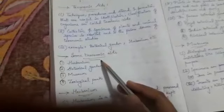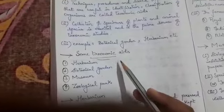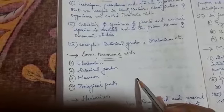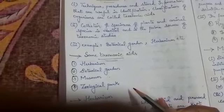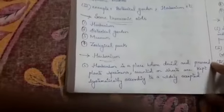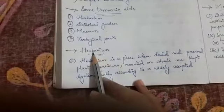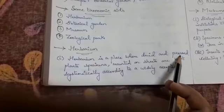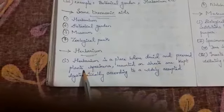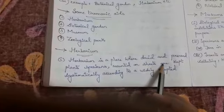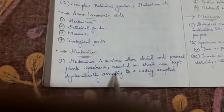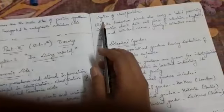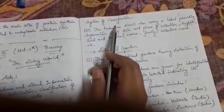There are many examples of taxonomic aids, such as herbarium, botanical garden, museum, and zoological park. We are going to see each one in detail. The first is the herbarium. A herbarium is a place where dried and pressed plant specimens, mounted on sheets, are kept systematically according to a widely accepted system of classification.